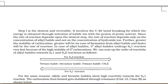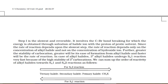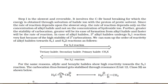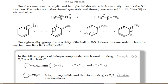Since SN1 involves a carbocation intermediate, the stability of that carbocation determines the reactivity order. The more stable the carbocation, the higher the chance of nucleophilic attack. Benzylic and allylic carbocations are equally stable and more stable than tertiary, then secondary, then primary, then methyl. Therefore, the reactivity order towards SN1 is: benzylic = allylic > tertiary > secondary > primary > methyl halide.